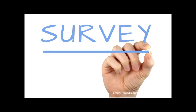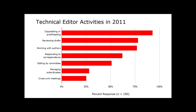The survey results in your assigned reading provide a sense of the wide variety of activities performed by tech editors. This slide lists the most common ones supplied by the 190 editors surveyed in 2011. The most common activity was copy editing or proofreading. Although the researchers did not categorize explicitly by levels of edit, there is some evidence that multiple levels are the norm. For example, reviewing drafts, working with authors, and editing by committee are all likely to involve structural editing, not simply copy editing.